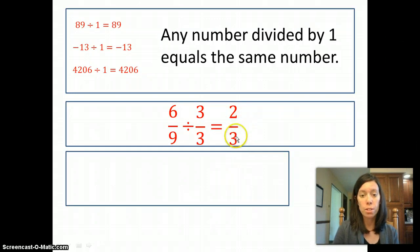But we know that 2 thirds is really the same as 6 ninths. We've reduced that fraction. It has to be the same because all we did was divide by 1. This is a way of writing a fraction in lowest terms.